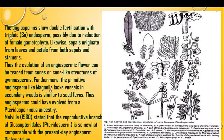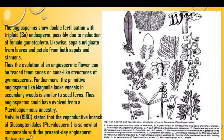Furthermore, the primitive angiosperm Magnolia lacks vessels. Pteridosperms also show a lack of vessels in their secondary xylem. In Magnolia the secondary wood shows absence of vessels, and seed ferns which are also called pteridosperms are also without vessels. Thus, angiosperms could have evolved from a pteridospermous ancestry. Melville in 1960 stated that the reproductive branch of Glossopteridiales is somewhat comparable with present-day angiosperms.